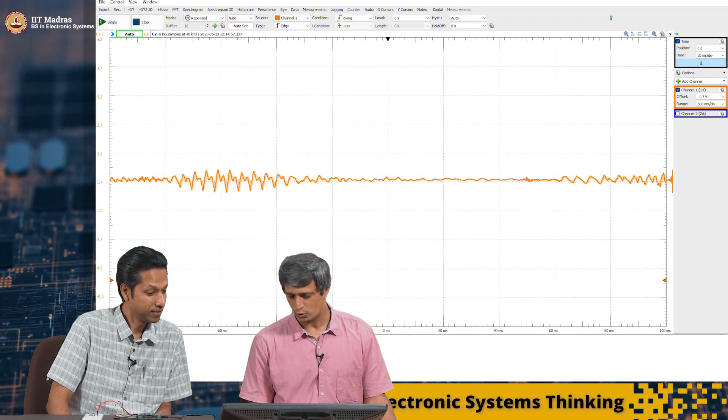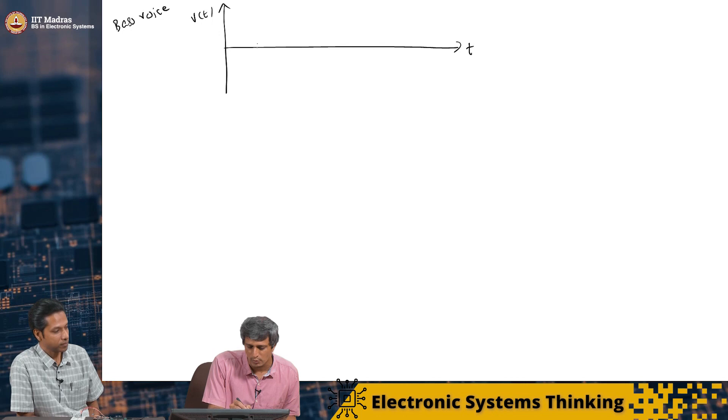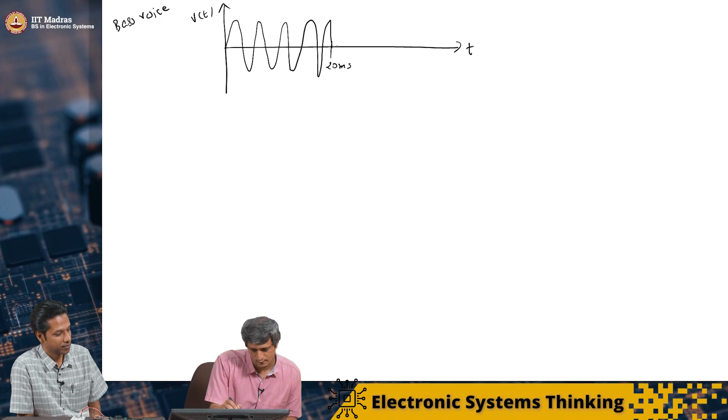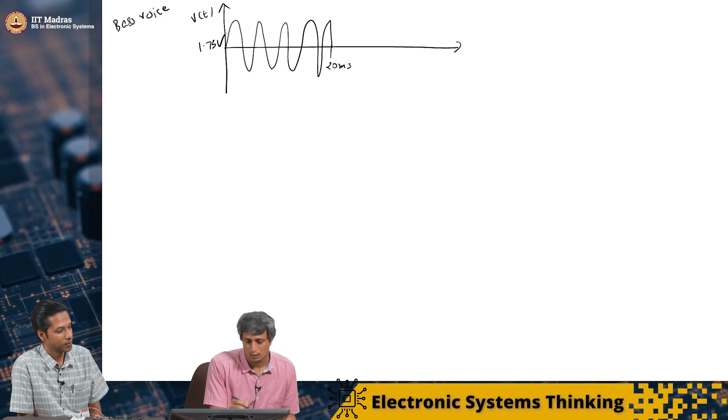So what we did now, this is a bass voice, V of t. So let us go again. Can you try it again? Hello, how are you? Yeah. So what you saw was, within 0 to 20 milliseconds, you saw a certain number of oscillations. So within 20 milliseconds, 0 to 20 milliseconds, maybe this is 0, you had certain wave, something like this. And of course, this is again at 1.75 volt.